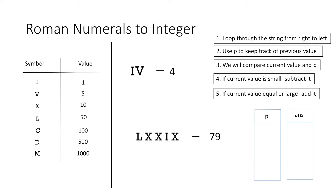Firstly, we initialize our variables p and answer to 0, then we start looping through our string using the variable i. Our first symbol is X, which has the value 10. Comparing it with p which is 0, the value of X is greater, so we add it to our answer. Thus our answer becomes 10, and we assign its value to p to keep track of the previous value while moving forward.